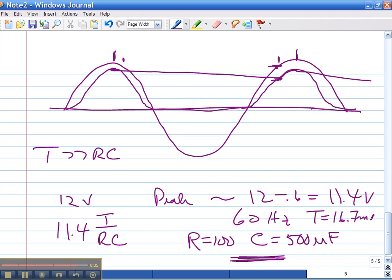So once you figure out how much this droop is, you just draw a straight line between there and there. And we have a very reasonable sketch for what the output voltage should be.